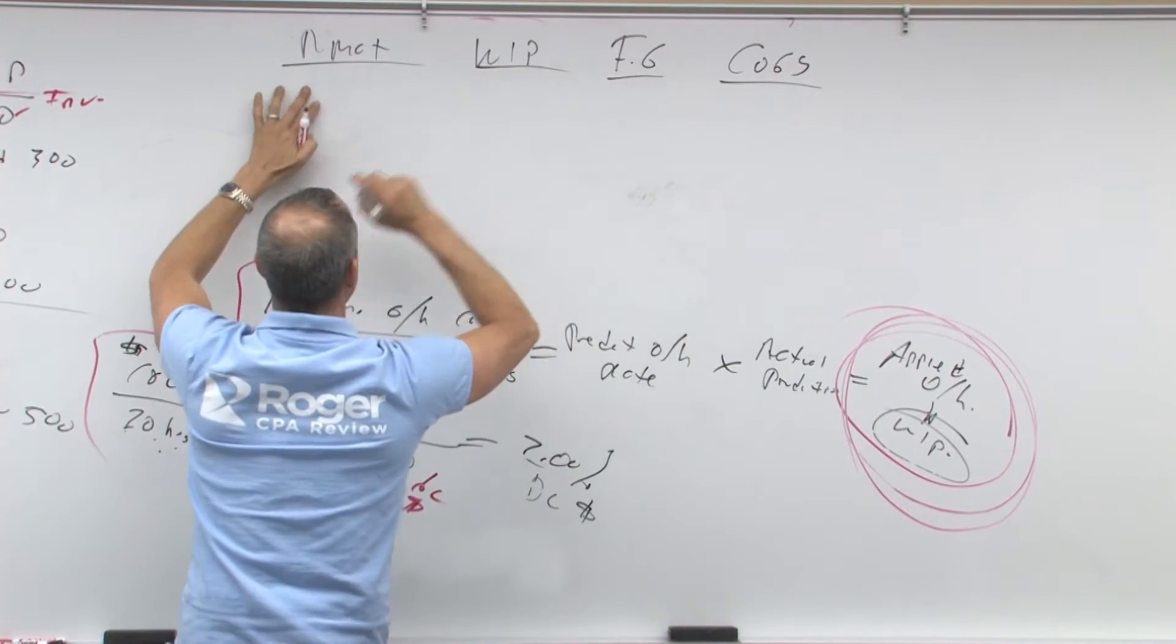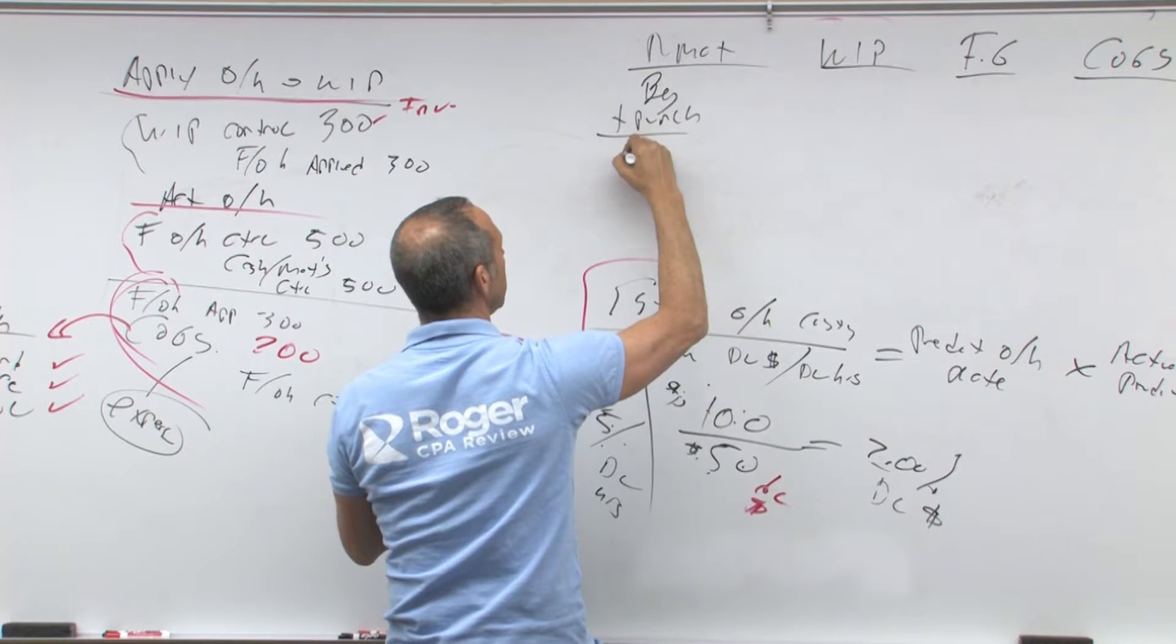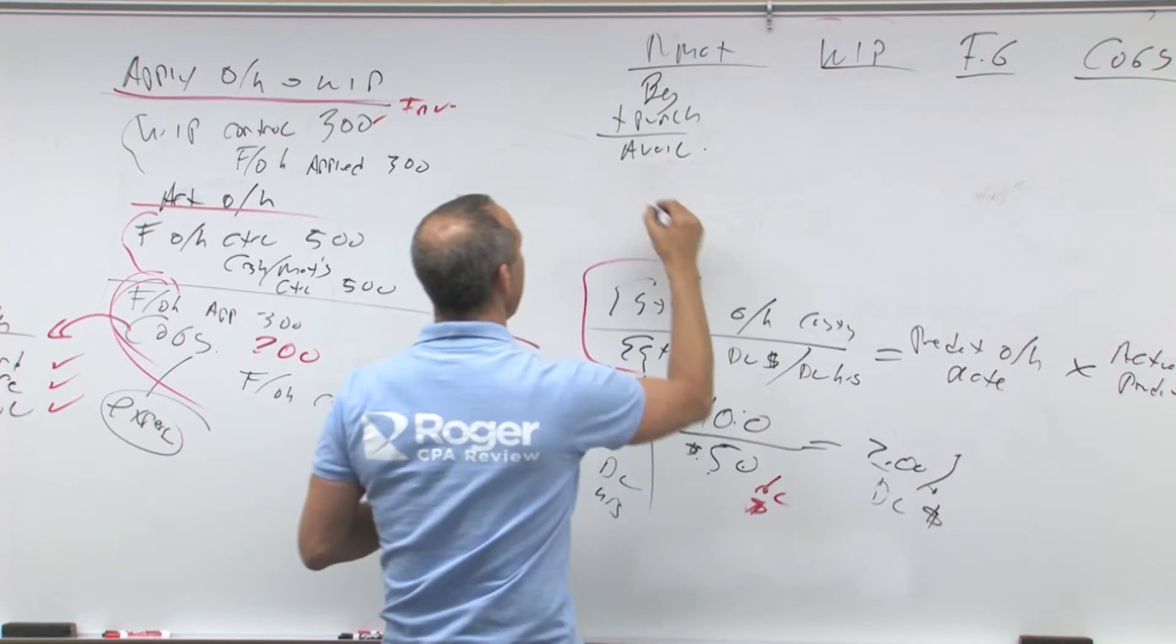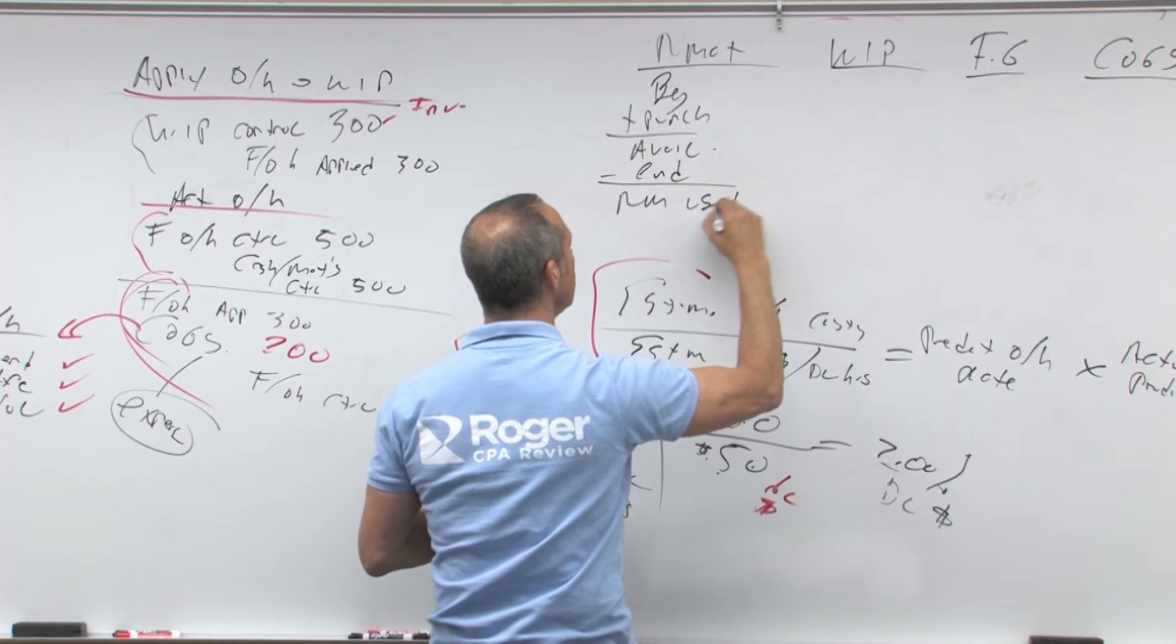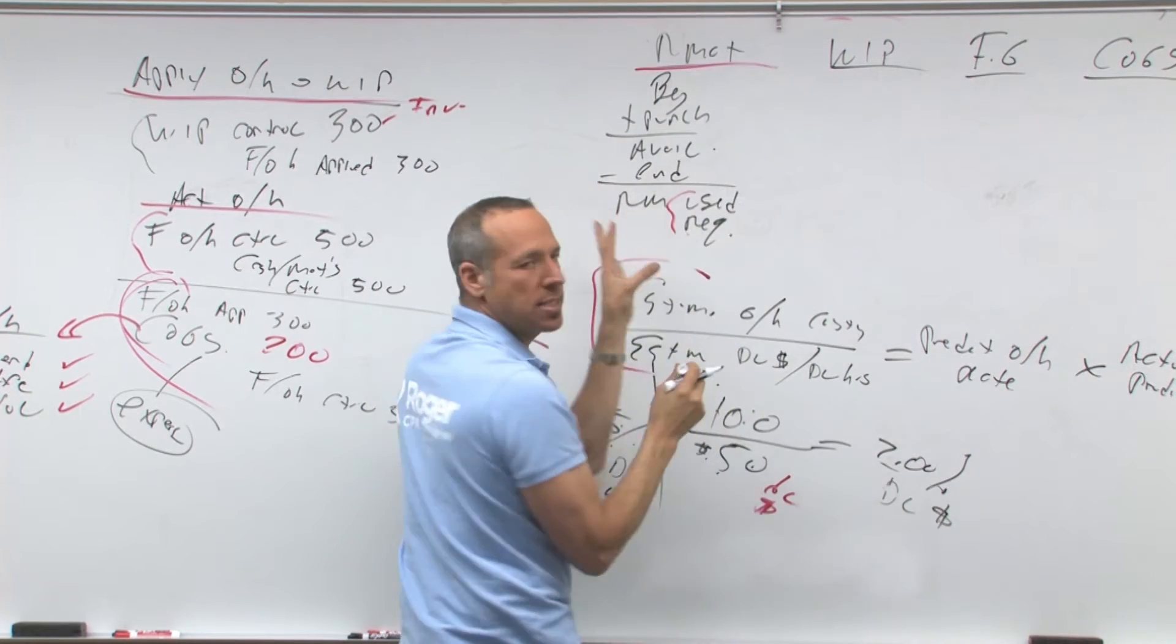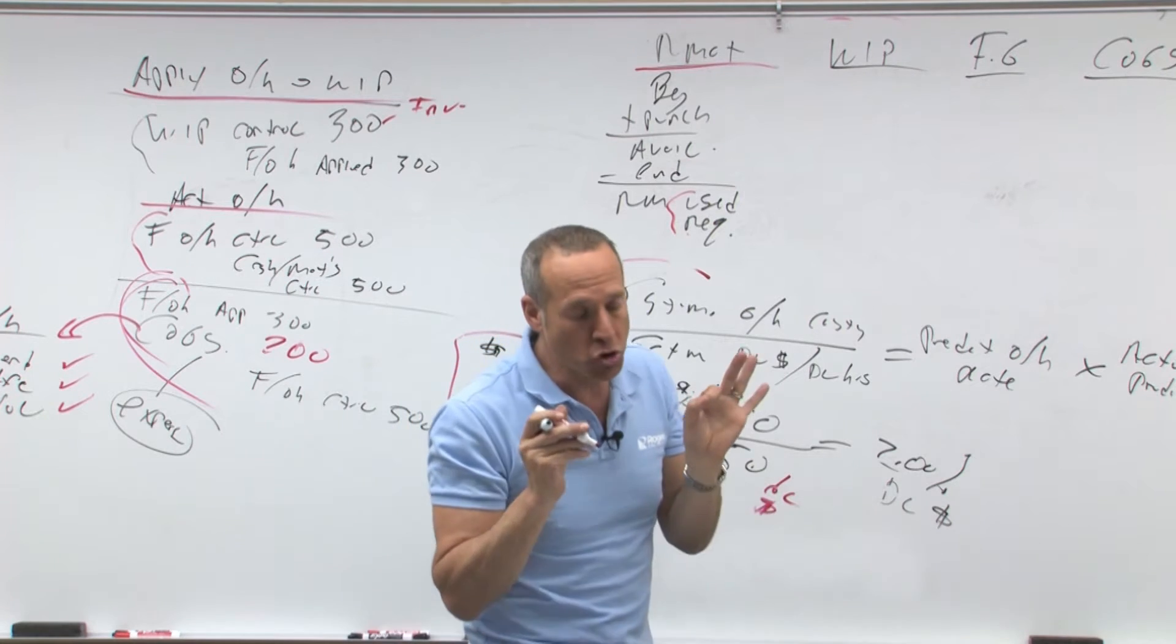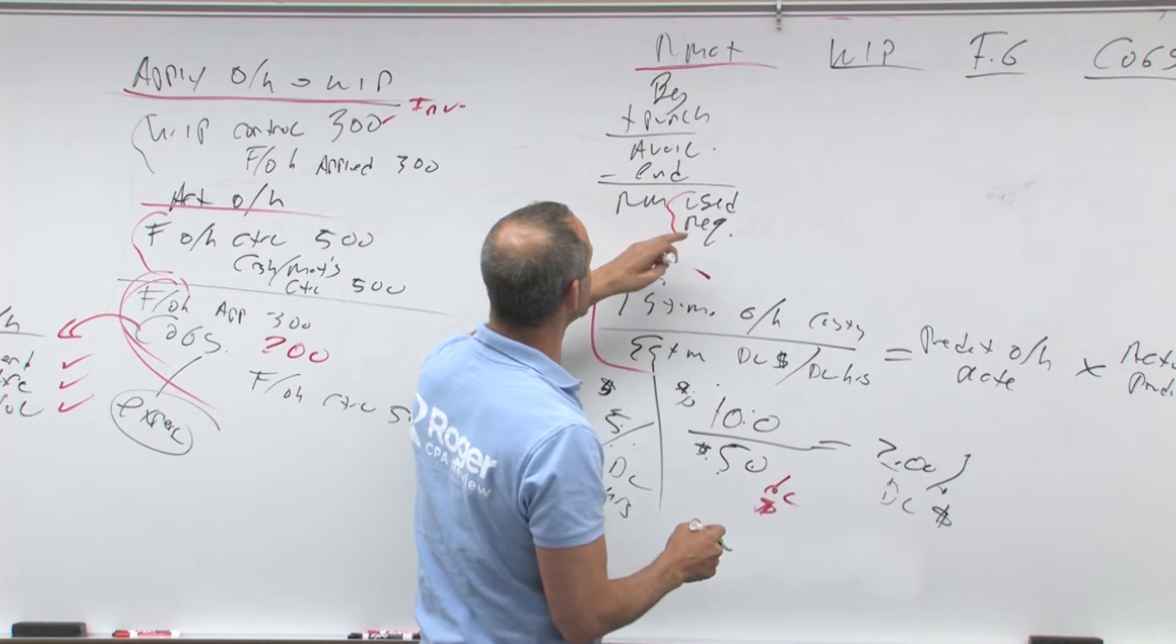All right, so raw materials, we have some beginning plus purchase equals raw materials available. Raw materials available, we're going to have minus some ending equals raw materials used or raw materials requisition. Now notice that this is generally direct materials, not indirect, but this will be your direct materials. So that is called your raw materials used, raw materials requisition.